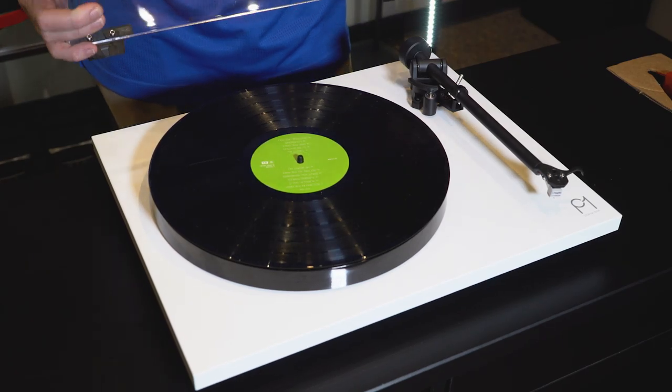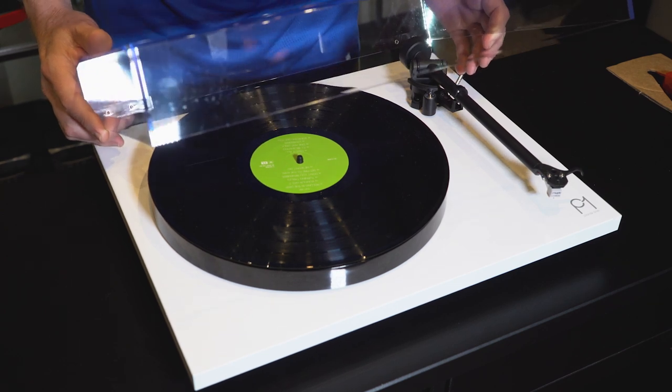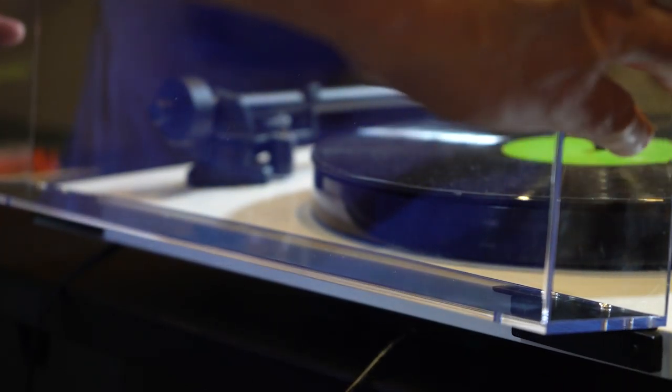Okay, the last step once you're sure everything is sounding good is to install the dust cover. It just goes in these little slots in the back. Line it up and close it and you're good to go.